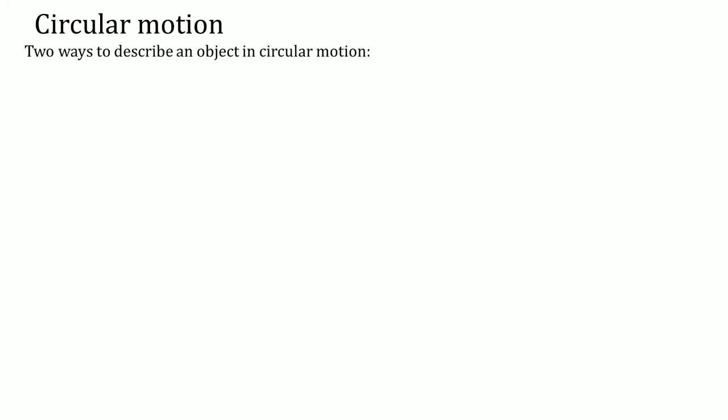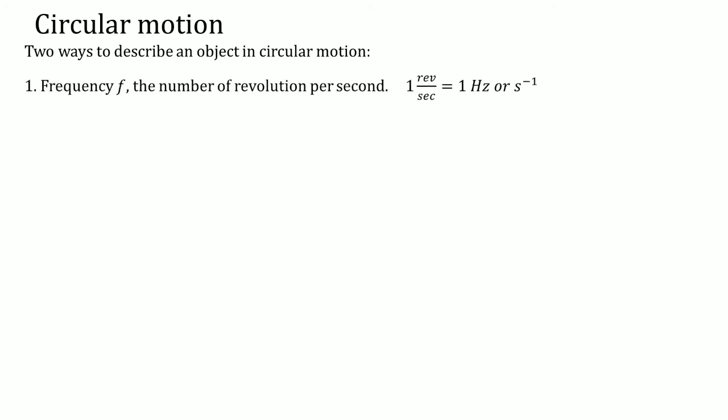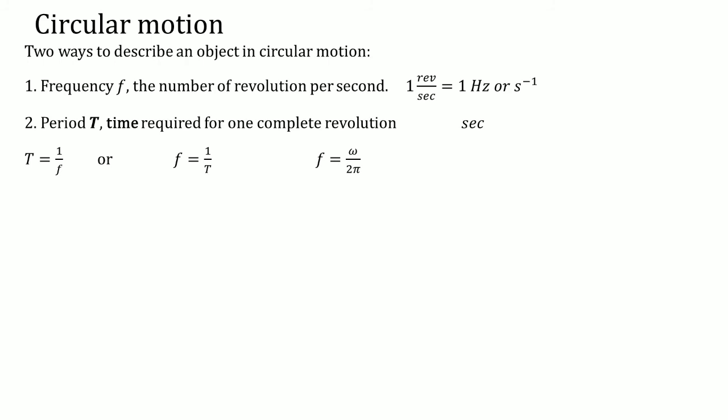Now we're going to talk about circular motion — a way to describe circular objects in circular motion, a little review. Frequency describes how many revolutions per second; one hertz is one revolution per second. The period is the time for one revolution, normally 2π. The period has an inverse relationship to frequency: T equals 1 over f, or f equals 1 over T. We also know that frequency equals omega over 2π.